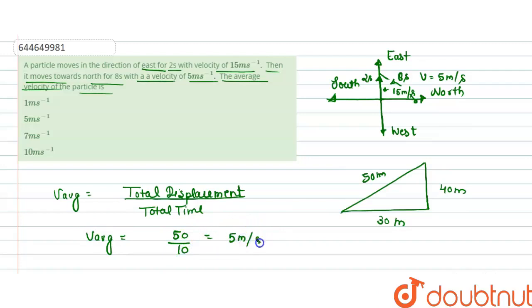So average velocity equals 50 upon 10, which gives us 5 meter per second. Total displacement is 50 and total time is 2 plus 8, that is 10 seconds. So this is the answer for average velocity.